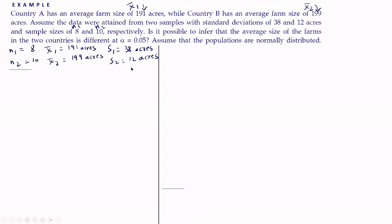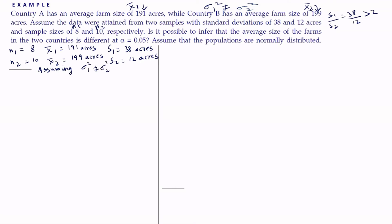First, let us check whether this is the equal or unequal variance case. Since s1 is greater than s2, we find s1 / s2 = 38 / 12, which is more than 2. Therefore we assume the population variances are unequal: sigma 1 square not equal to sigma 2 square.